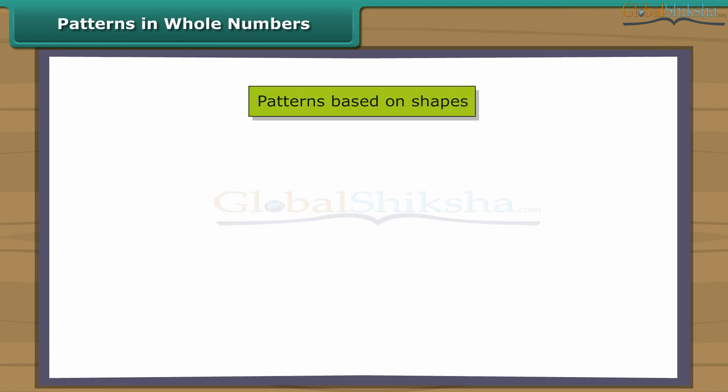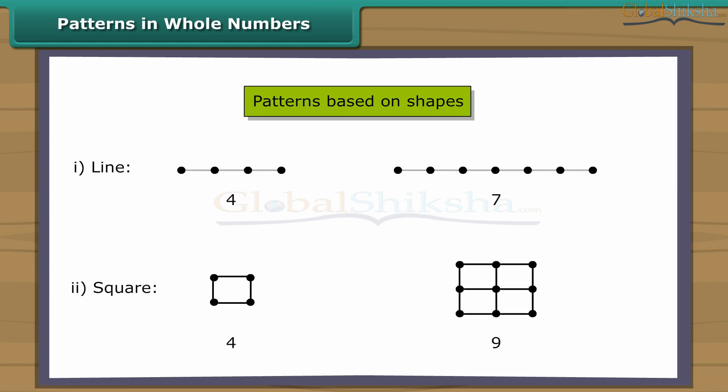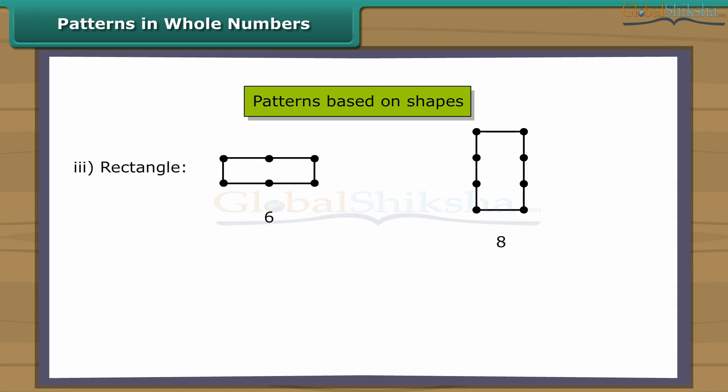Patterns in whole numbers. Numbers can be arranged in some elementary shapes using dots. The shape could be a line, square, rectangle, triangle. Every number can be arranged as a line. For example. Some numbers can be arranged as squares. For example. Some numbers can be arranged as rectangles. Rectangles can be a horizontal arrangement or a vertical arrangement. For example. Some numbers can be arranged as a triangle. For example.